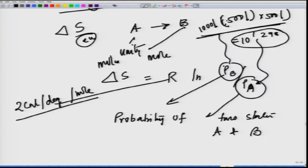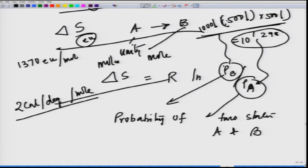Therefore, the entropy change for reorientation of the coins when the container is vigorously shaken is about 1370 EU per mole of such containers, which is 6 × 10^23 containers. Because delta S is positive for a transition from A to B, reactions with a large increase in entropy are favored and will occur spontaneously. If delta S is greater than 0, these are very spontaneous.